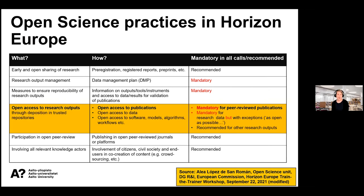Here is a table of open science practices in Horizon Europe projects. This presentation has mainly covered open access to publications, which is mandatory for peer-reviewed publications in Horizon Europe projects, and also recommended for other research outputs even if not peer reviewed. There are also other mandatory practices in Horizon Europe — for example, data management plans are mandatory for all Horizon Europe projects. Next, let's have a short look at early and open sharing of research, which is a recommended practice in Horizon Europe projects.